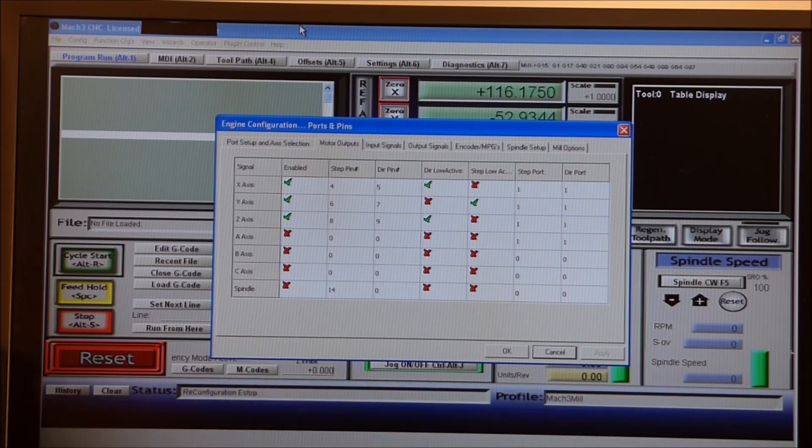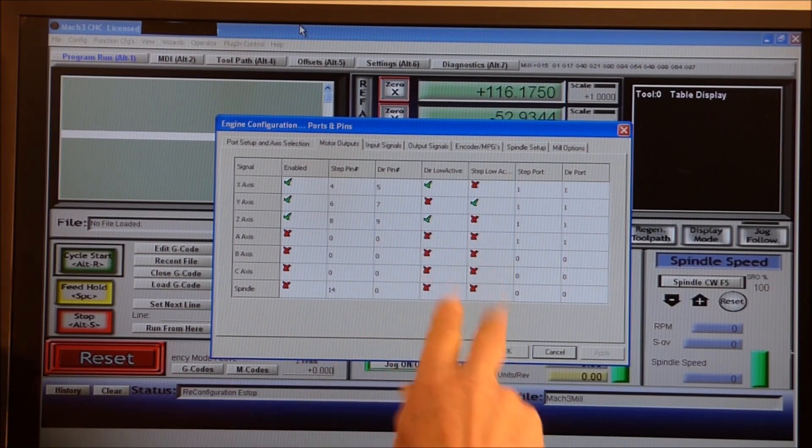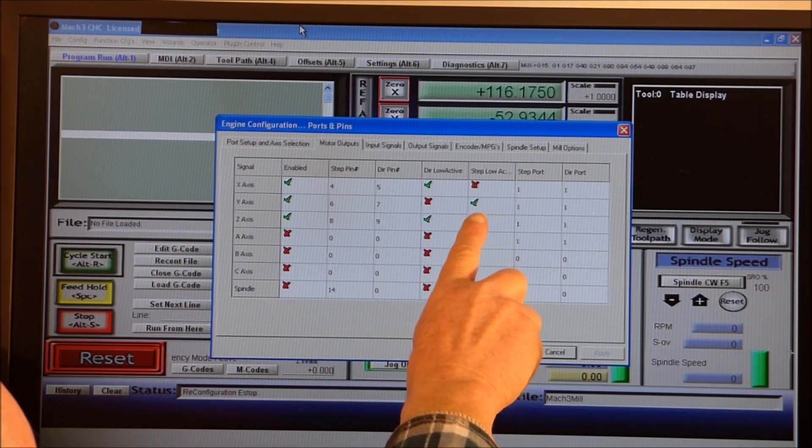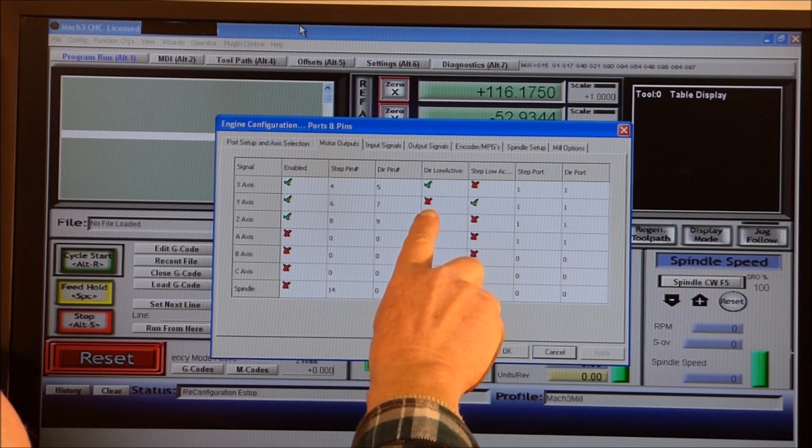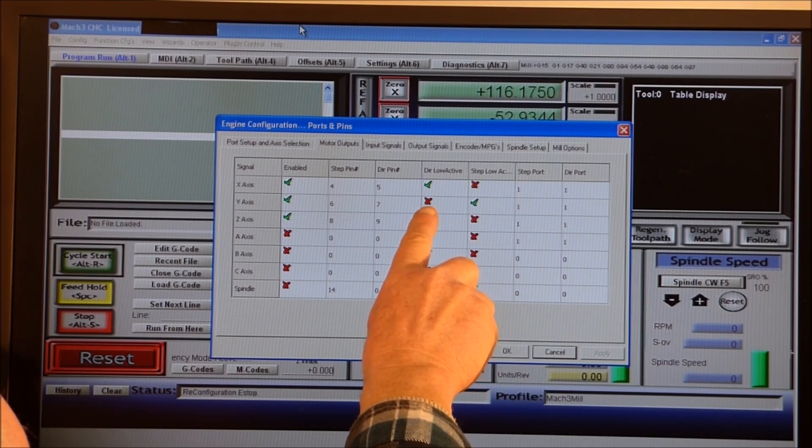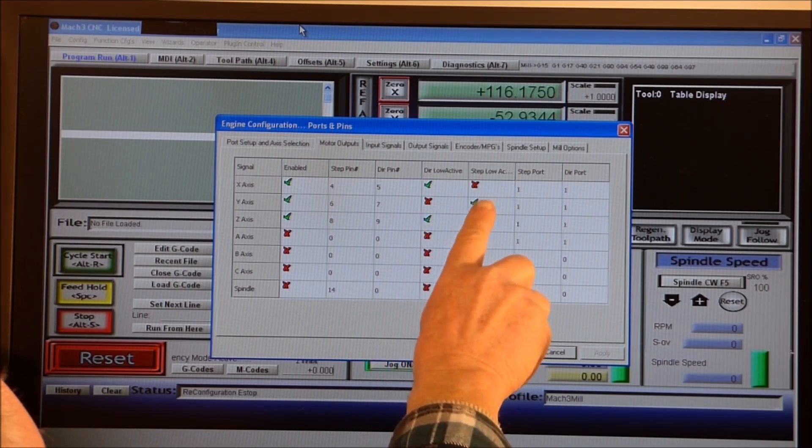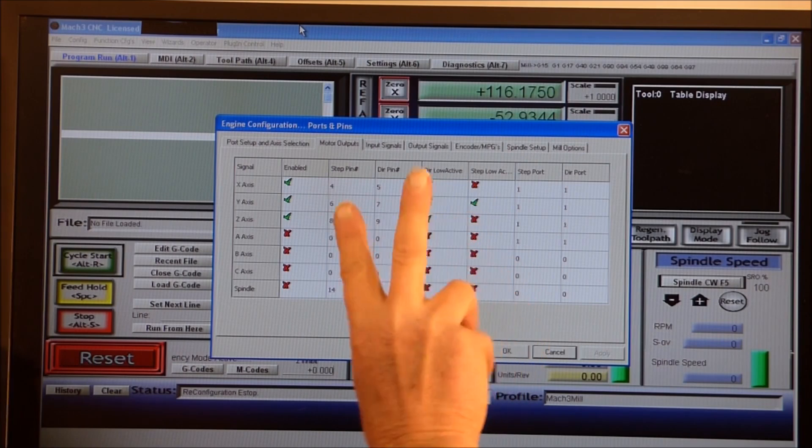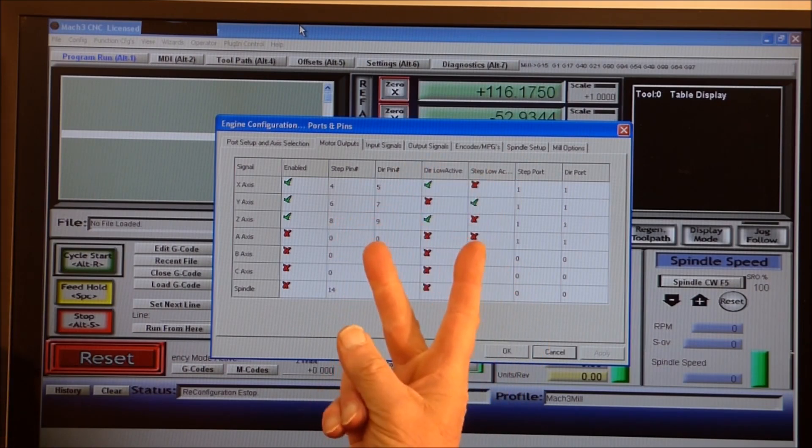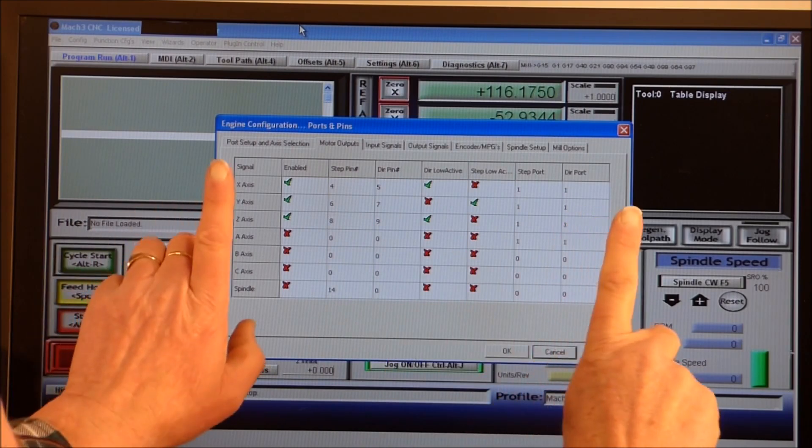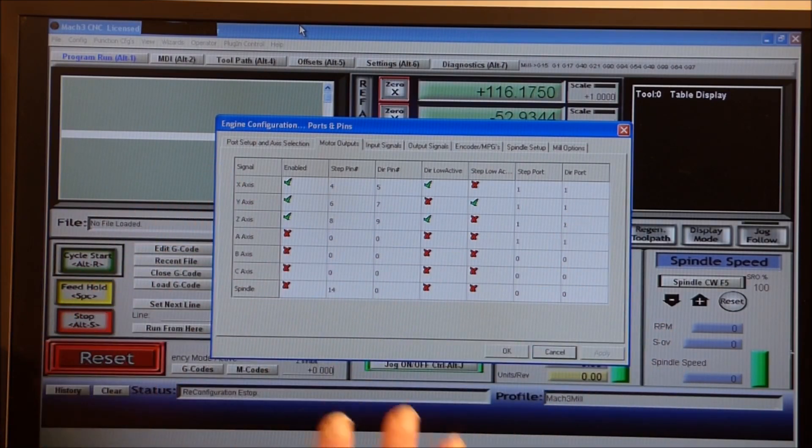If for example you have your Z axis and when you press the Z plus it goes in the Z minus direction, you can reverse it. All you do is tick that box or click on that box - that will go to a green tick, then tick on that one and it will go to a red cross. That will invert it and the axes will move in the opposite direction.